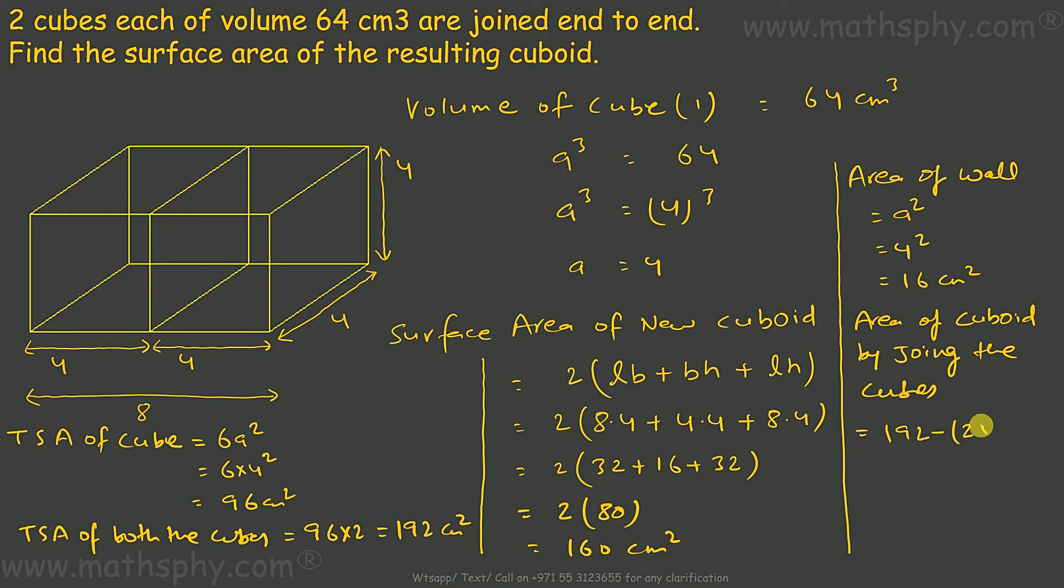2 times 16, so 192 minus 32 gives you 160 cm².